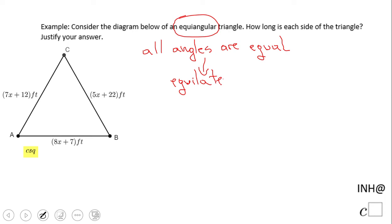This is a triangle that has all angles equal. Each angle is 60 degrees. This is an equilateral triangle, which means all sides are congruent. This is very important because now we know what we need to do.